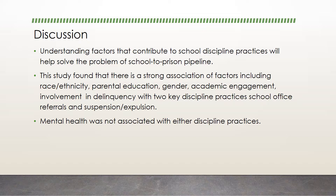The study found a strong association of factors including race/ethnicity, parental education, gender, academic engagement and involvement, and delinquency with two key discipline practices: office referrals and suspension/expulsion. The results point that students were more likely to report an office referral if they had been involved in more delinquency during the prior year, had lower academic preparedness, and had spent fewer hours doing homework. The researchers also found that African American students were more likely to be suspended or expelled, but did not find that they were significantly more likely than other racial groups to report an office referral.